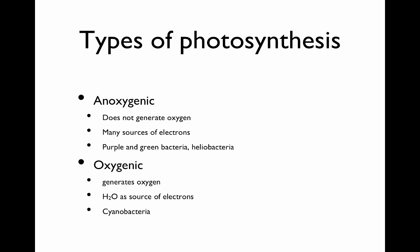Oxygenic photosynthesis generates oxygen and uses water as a source of electrons. This is done by cyanobacteria, and it is also the system that plants use.